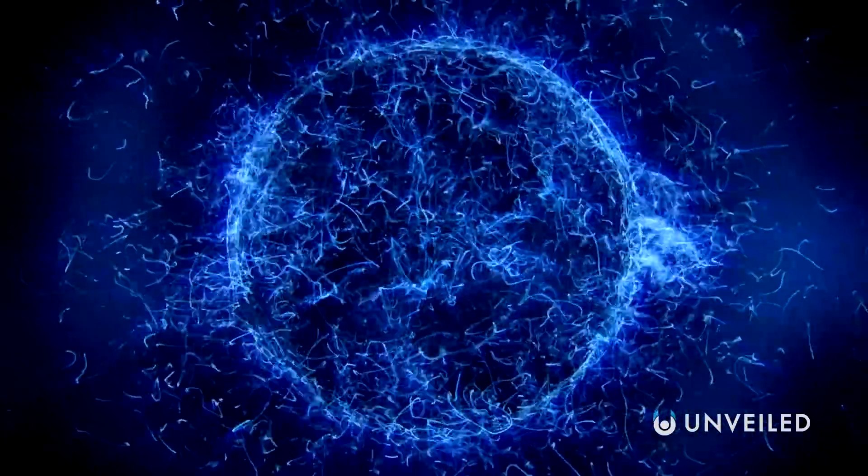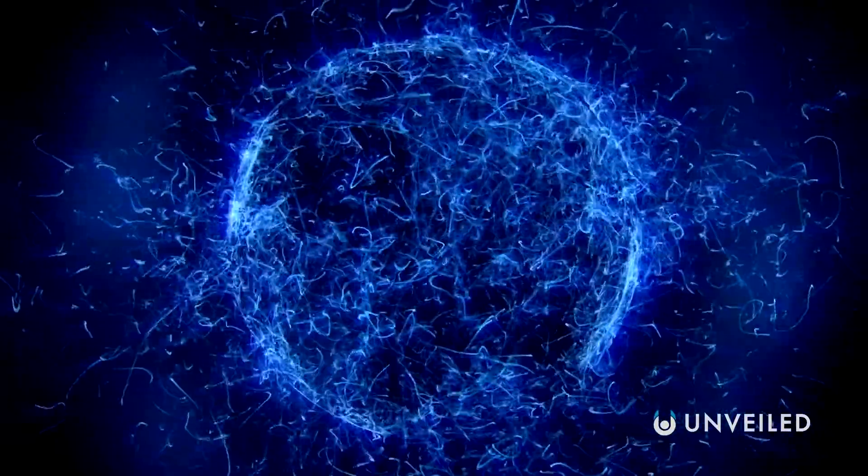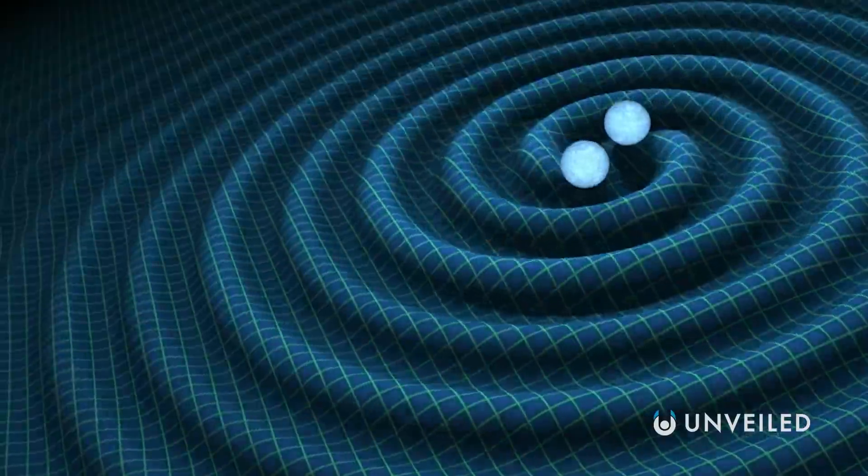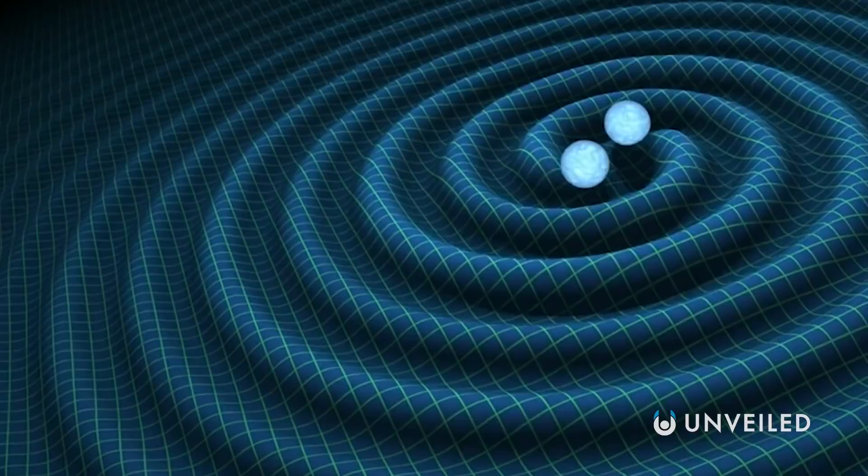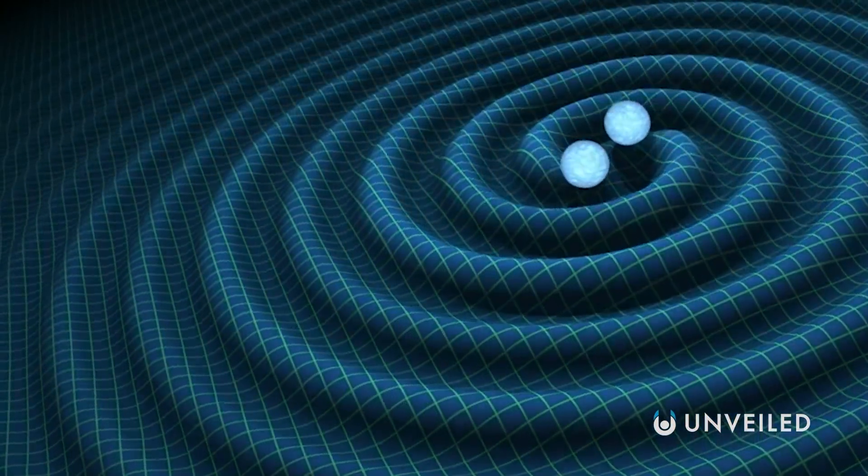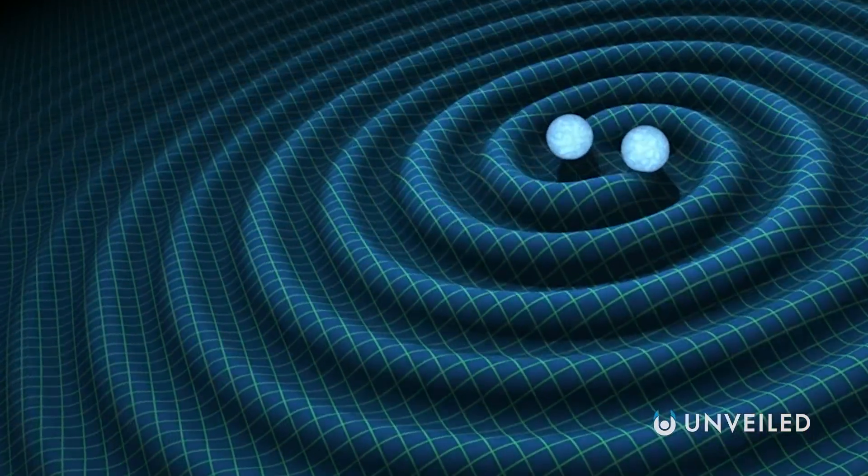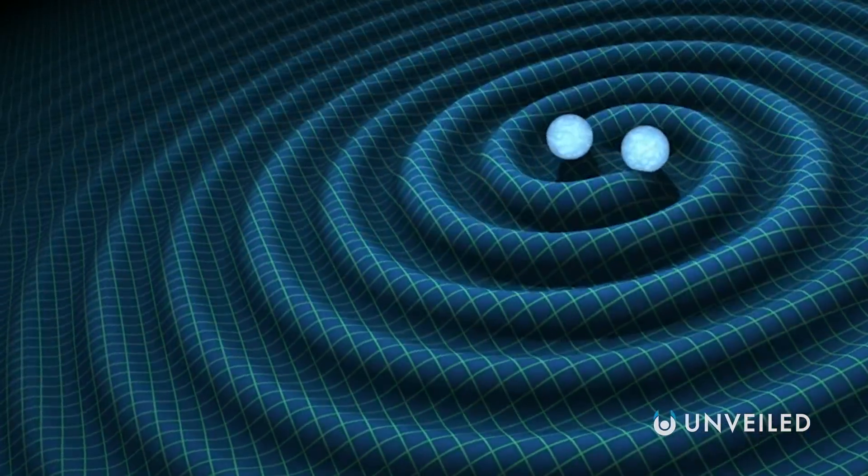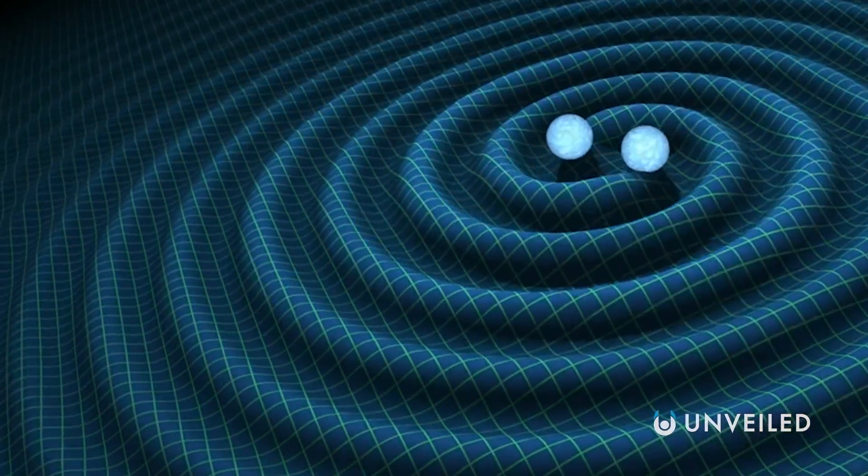Dark matter, on the other hand, is speculated to exist because of how we currently understand gravity to work. It's believed to be there because of various gravitational effects we've observed which don't make sense without it. Overall, while we know roughly what dark matter does and where it probably is, we're still not sure on exactly what it is.